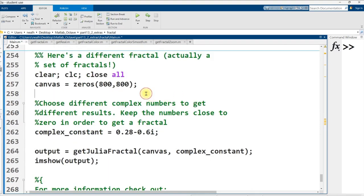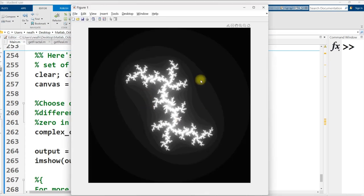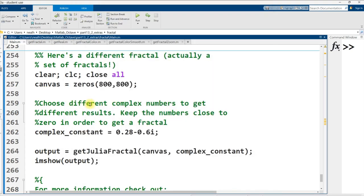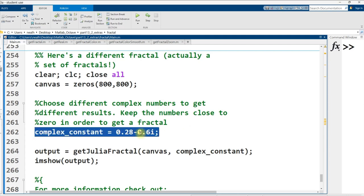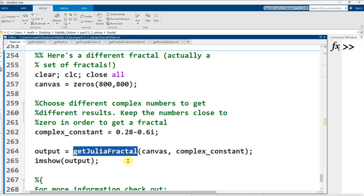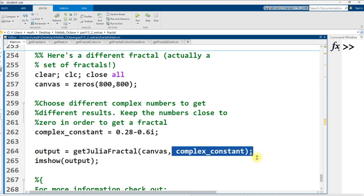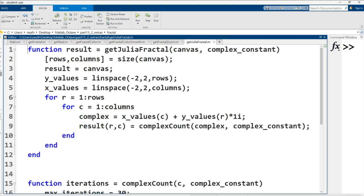And lastly, here is a totally different fractal. Let's check it out. All right. So this is a fractal from the Julia set. It's got an interesting fidget spinner sort of shape there. My canvas is the same, 800 by 800. And I've got this complex number 0.28 minus 0.6i. That's very arbitrary. Our function is getJuliaFractal. It takes the canvas's input and the complex constant. Let's open up the function itself.